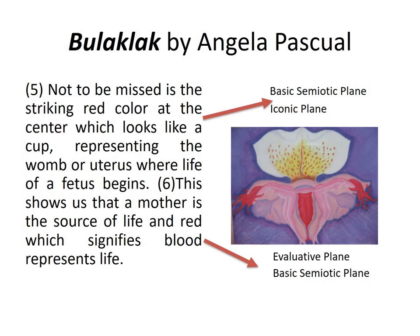Not to be missed is the striking red color at the center, which looks like a cup, representing the womb or uterus where the life of a fetus begins. This shows us that a mother is the source of life, and red, which signifies blood, represents life. The fifth sentence is a combination of basic semiotic plane and iconic plane — I look at the color red and put representations to it, and I focus also on the images. Number six is a combination of evaluative plane and basic semiotic: when I said that the mother is the source of life, that's something universal, a social issue; and when I mentioned red signifying blood and life, that's basic semiotic plane.